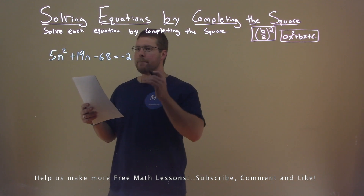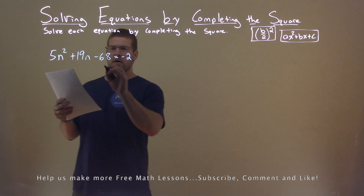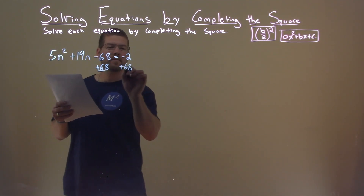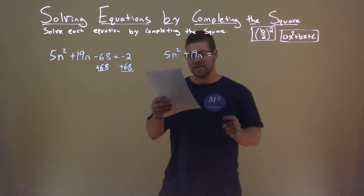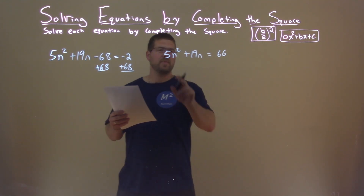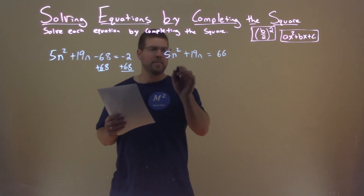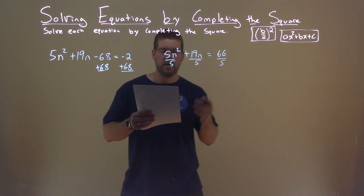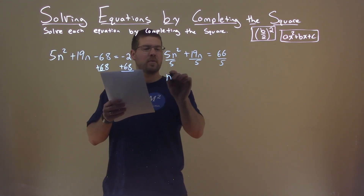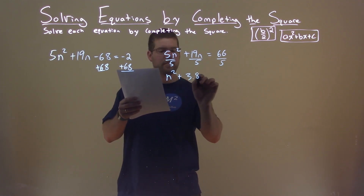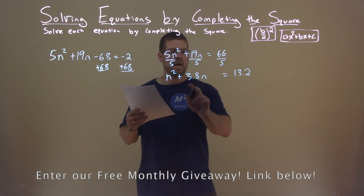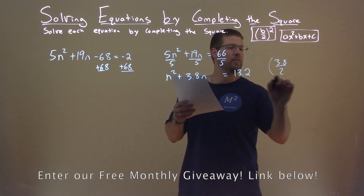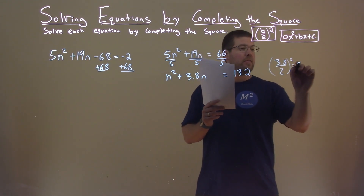We're given this problem right here: 5n squared plus 19n minus 68 equals negative 2. We have to solve by completing the square. First thing I'm going to do is add 68 to both sides, leaving 5n squared plus 19n equals negative 2 plus 68, which is positive 66. I don't like an A value besides 1, so I'm going to divide all parts by 5 — that gives n squared plus 3.8n equals 13.2. My B value is 3.8. Taking 3.8, dividing by 2, and squaring it comes out to be 3.61.